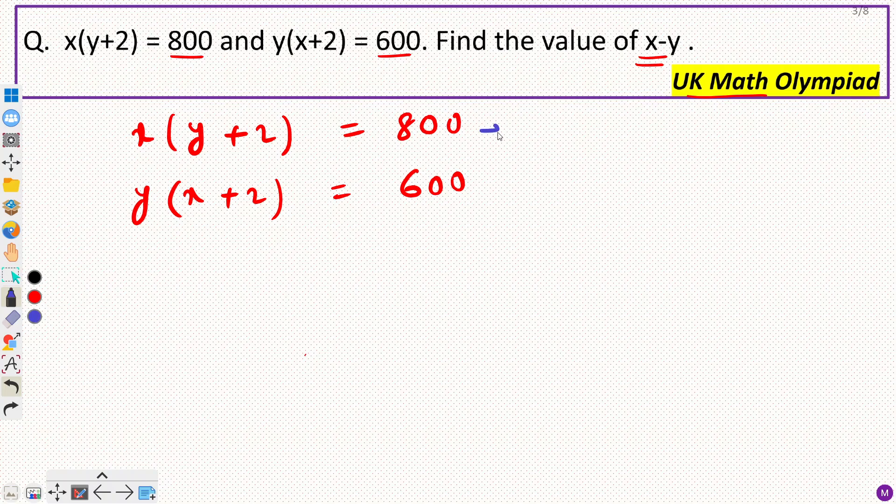Now can I write this as, if I apply distributive property, then I can write this as x into y plus 2x equal to 800.